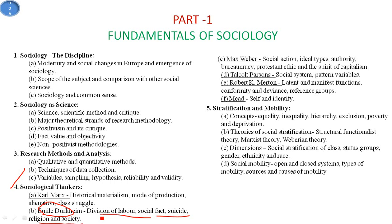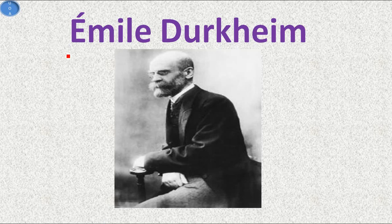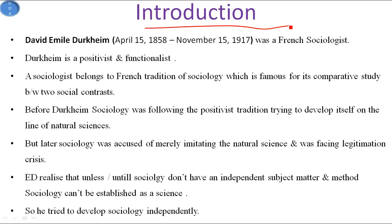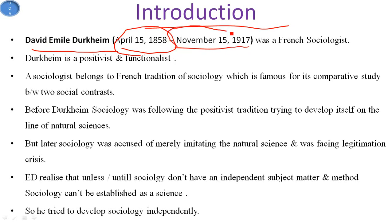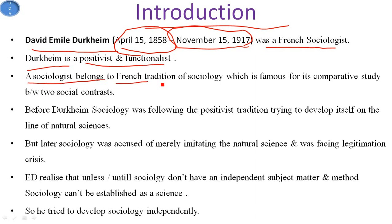So, introduction to Emile Durkheim. David Emile Durkheim was born on April 15, 1858, and passed away on November 15, 1917. He was a French sociologist, and Durkheim is considered a positivist and functionalist.